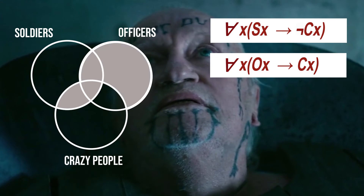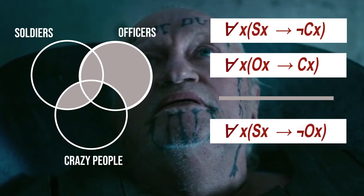One may wonder whether it follows that no soldier is an officer — which is the same as all soldiers are not officers. Is this a valid conclusion to draw? As we can see, the two spaces in the intersection of officers and soldiers have been crossed out and are therefore empty. The conclusion would be false only if there were a non-crazy officer or a crazy soldier, but according to the premises, this cannot be. Therefore, this syllogism is valid.